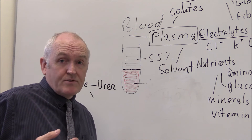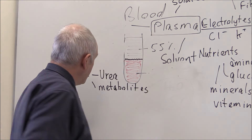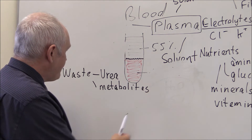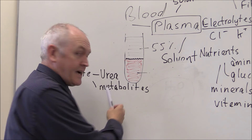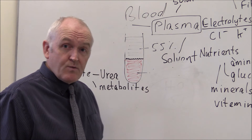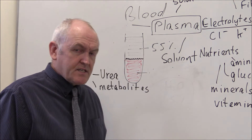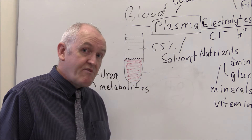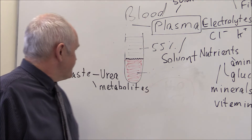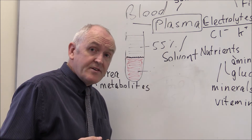Urea's purpose is to carry nitrogen waste from the liver to the kidneys where it can be excreted. The liver is also going to break down toxins into metabolites - breakdown products of larger molecules - making them more soluble so they can be readily excreted in the urine. The only way waste products get from the liver or cells to the kidneys is by being transported by the blood in the plasma.